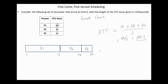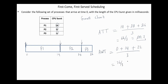The average waiting time: Process 1 waits 0, Process 2 waits 14, and Process 3 waits 22, which is 36 over 3. So the average waiting time equals 12.